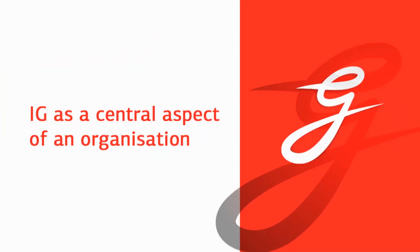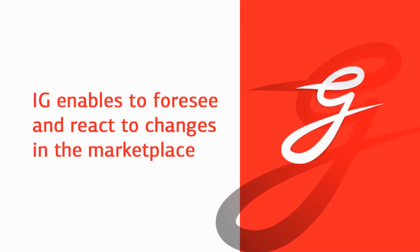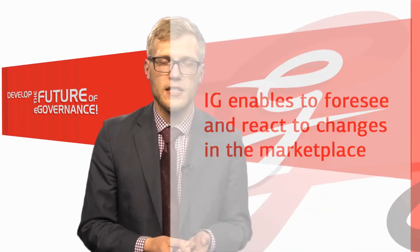The three things I would like you to take away from this lecture are: firstly, information governance will become one of the central aspects of an organization as higher maturity levels are achieved. Second, business benefits appear at higher maturity levels while costs go up at lower maturity levels. Third, information governance grants the organization the ability to foresee changes in the marketplace and react preemptively. Thank you.